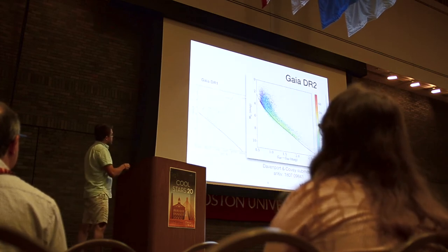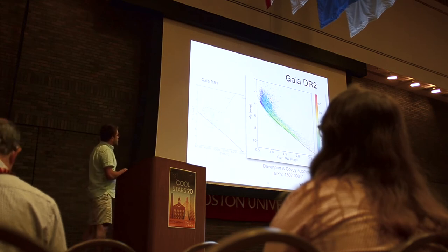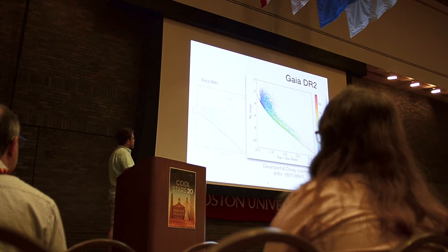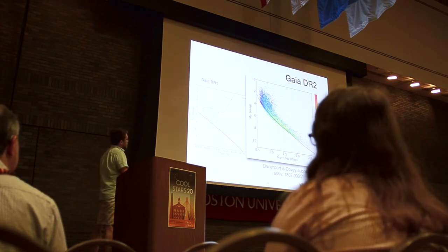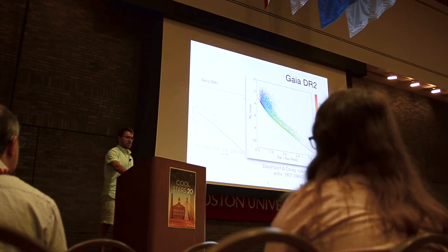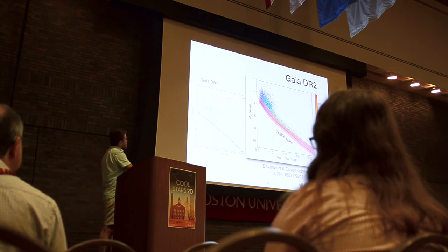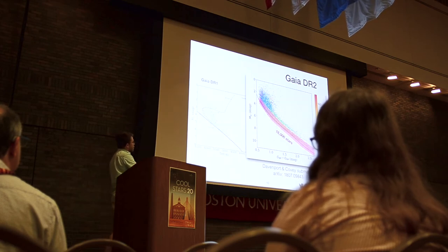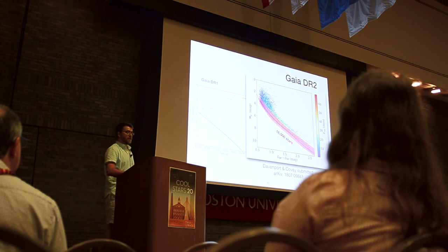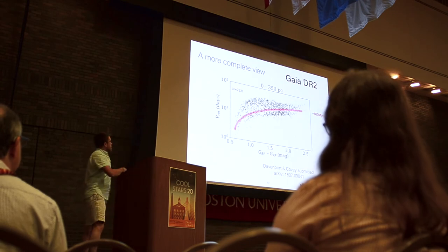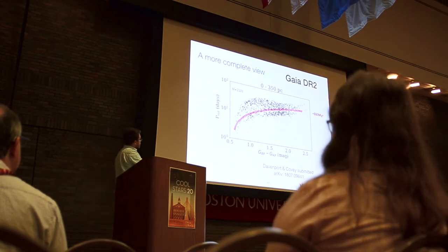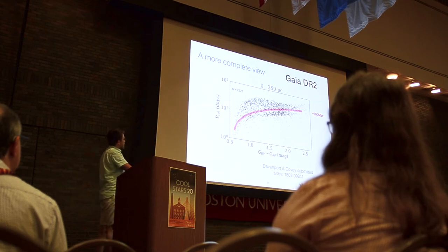Now we are gloriously in the Gaia DR2 era. This is the full catalog of Amy's rotation sample — 34,000 stars with good Gaia distances and parallaxes. You can see lots of interesting structure: sub-giants, binary stars, incredible detail on this diagram. I'll grab a box of only the clearly single main sequence stars, throw out all the interesting sub-giants and binaries, and we'll have about 16,000 stars that are obviously single-looking main sequence stars. This gives us a more complete view.